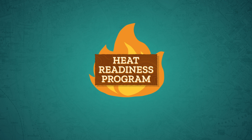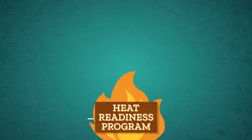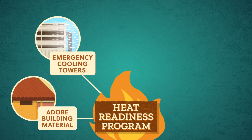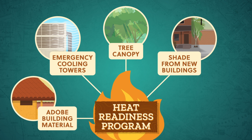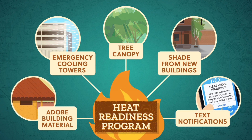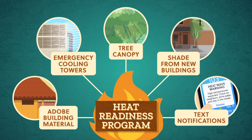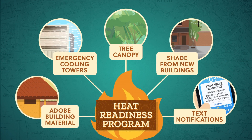Phoenix has introduced a program that treats heat readiness on par with climate change disaster preparedness. Plans include a return to traditional building materials like adobe, redesigning low-income neighborhoods with emergency cooling towers, increasing the city's tree canopy, and orienting new buildings so they shade sidewalks and courtyards, along with alerting residents with text notifications when a heat wave is imminent. But citywide measures can only do so much, and combating urban heat islands has to do with where and how resources are given to the communities that need them most.